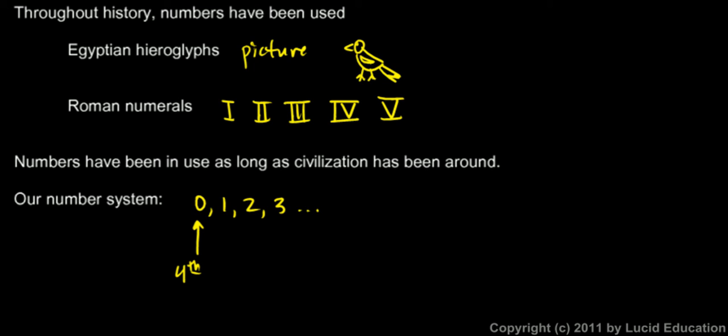That allowed numbers to be used in the way that we use them today, which allows math to be done a lot more easily. That was a long time ago, the fourth century BC, almost two and a half thousand years ago. The Hindus invented that, and it was later adopted by the Arabs. So it's sometimes referred to as the Hindu-Arabic system.